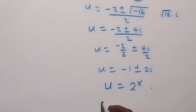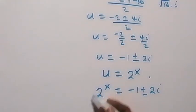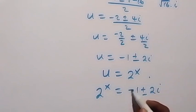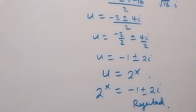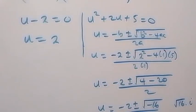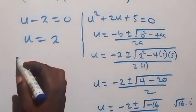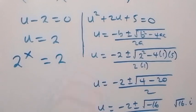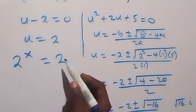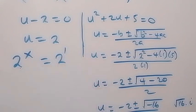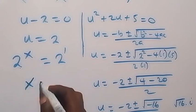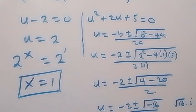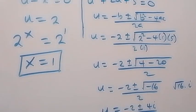Recall that we represented u as 2 raised to power x. When we compare, we have two possible values: 2 raised to power x equals to minus 1 plus or minus 2i. This side gives a complex solution, so we reject it. Going back, we have u equals to 2, and since u is 2 raised to power x, we have 2 raised to power x equals to 2, which is 2 raised to power 1. Equating the powers gives x equals to 1.